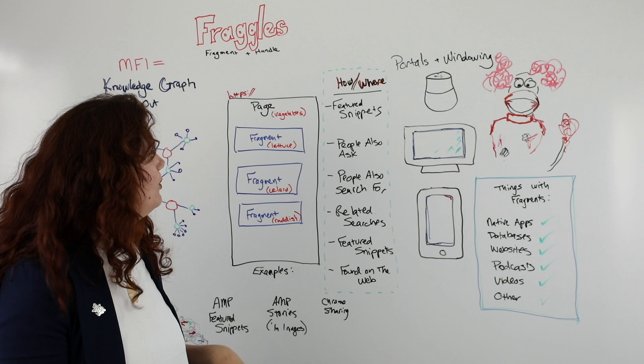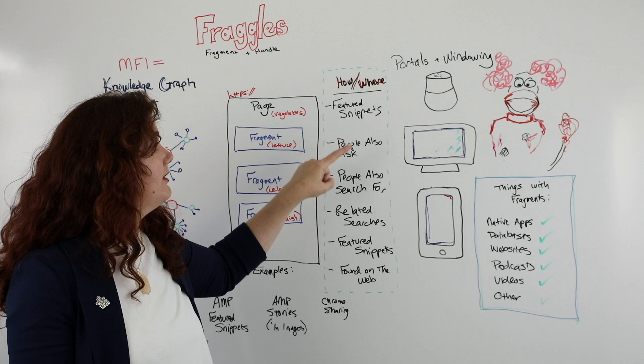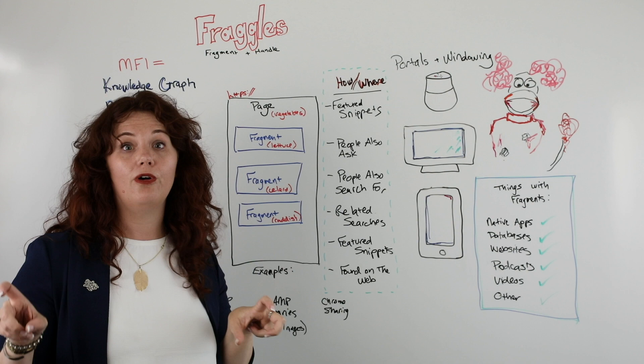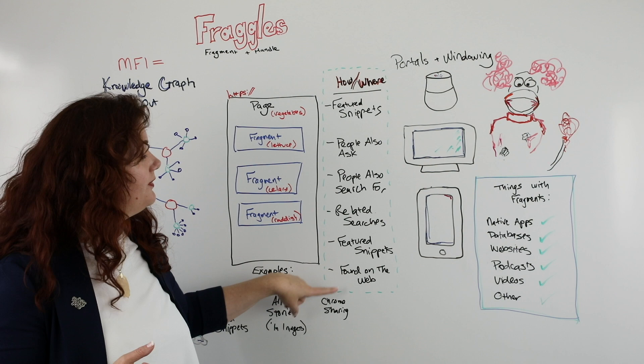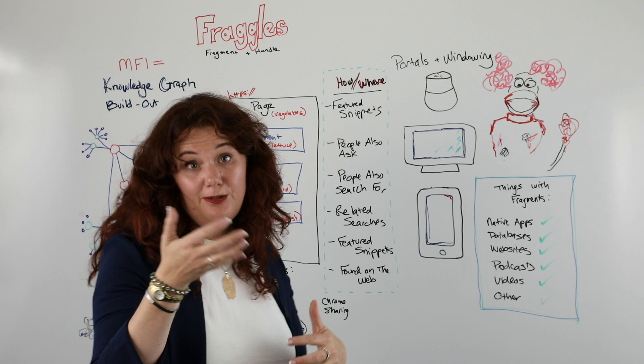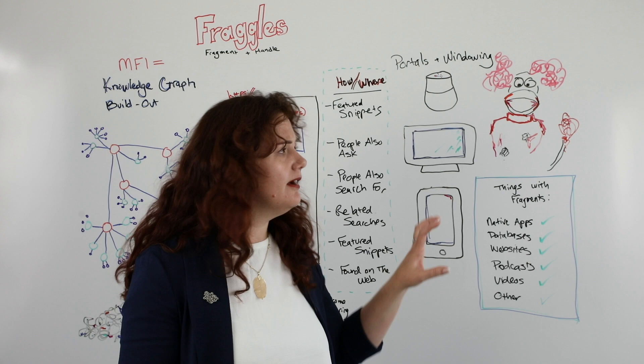I personally think we're seeing the buildout of the knowledge graph in a lot of different things. Featured snippets are facts or ideas that are looking for a home or validation in the knowledge graph. People Also Ask seem to be the related nodes. People Also Search For — same thing. Related Searches — same thing. And "Found on the Web," which is another way Google is putting expanders by topic and giving you a carousel of featured snippets to click through on. So we're seeing all of those things.